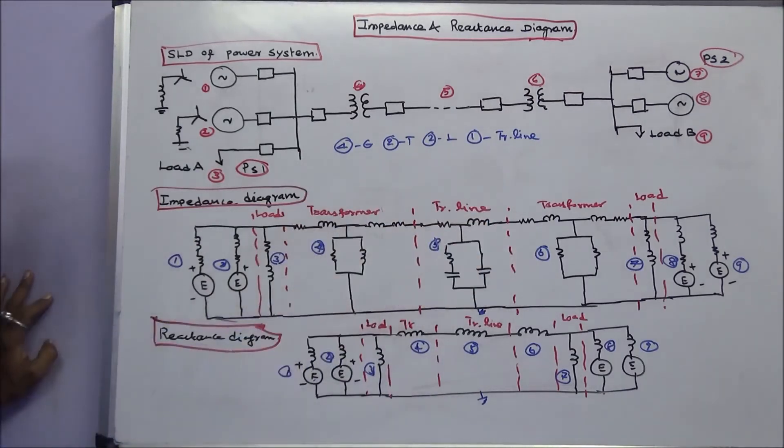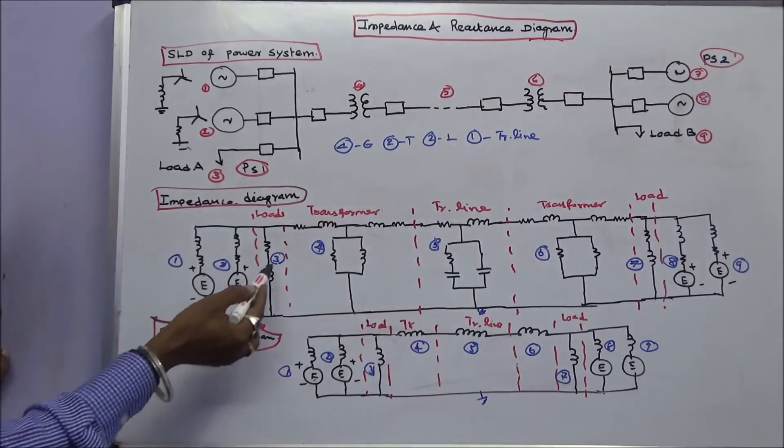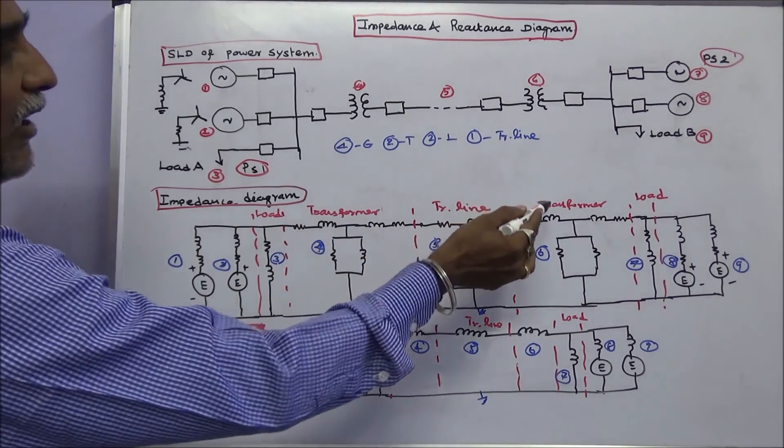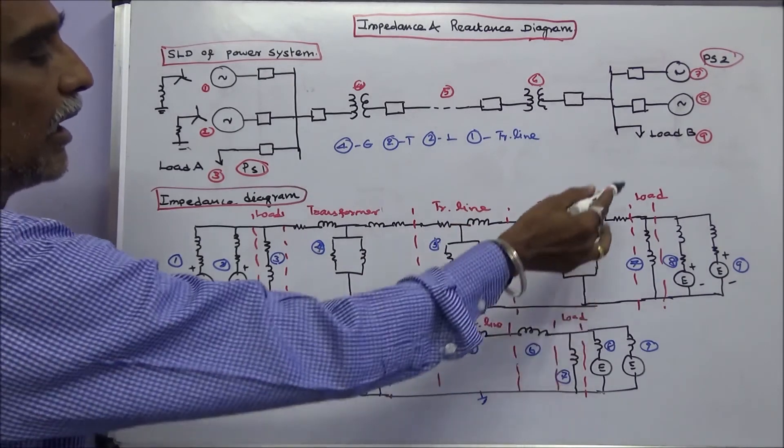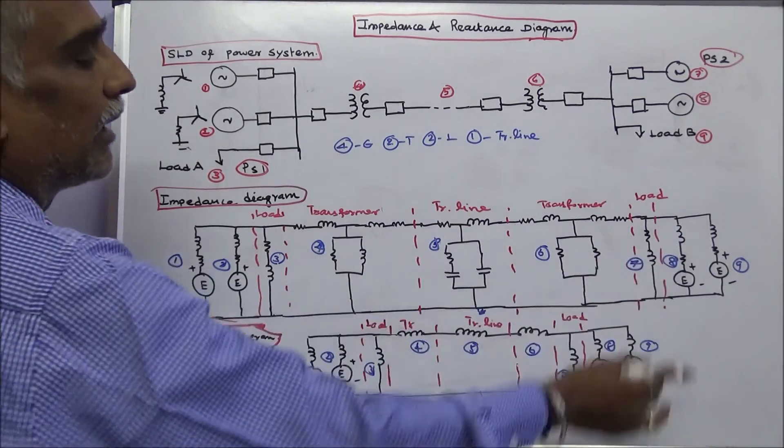This is the impedance diagram. This is generator one, generator two, load, this is three, this is transformer four, transmission line five, transformer, this is six, the load is seven, generator eight, and then generator nine.